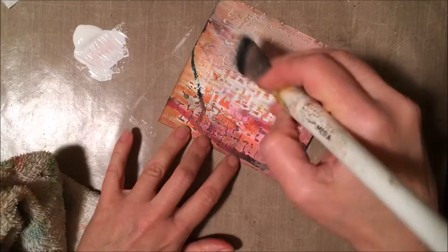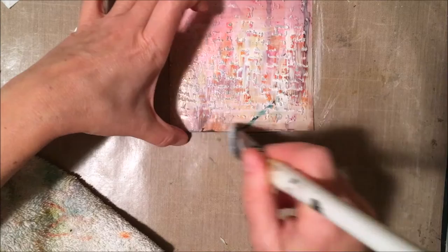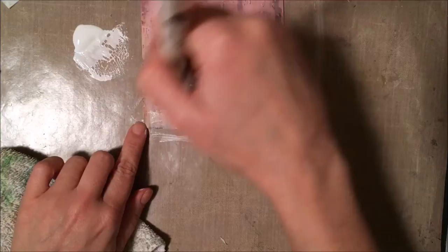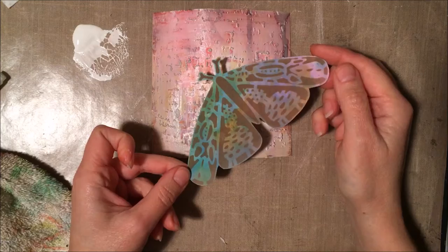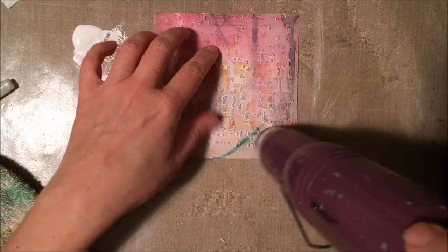A little watered down gesso and oh, because it's going over distress ink, not the oxide, but just regular distress ink, what I get is a little bit of blending of all those colors. So I end up still kind of with that pinkish background, but now it's muted because of the gesso and I like that much more.